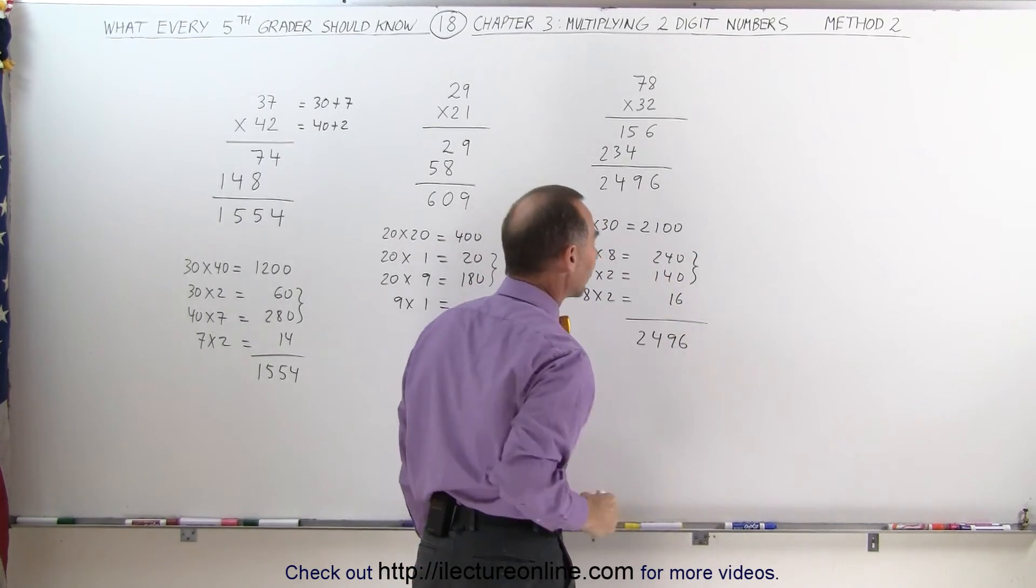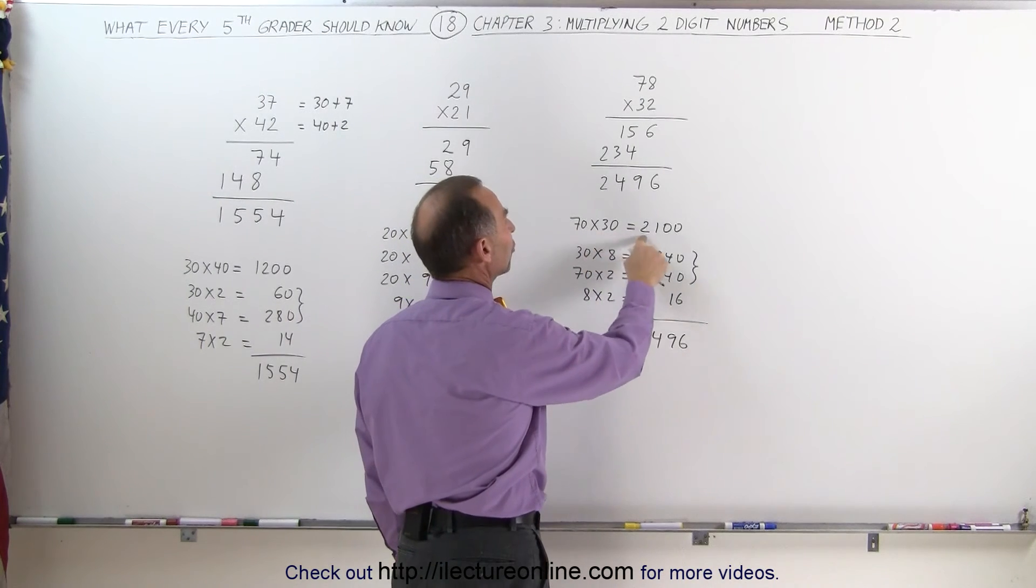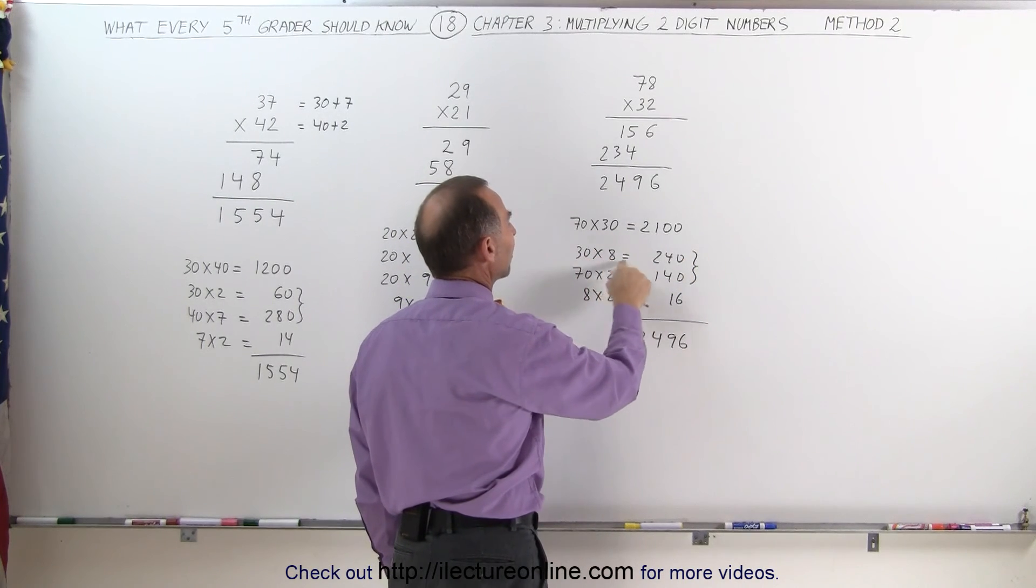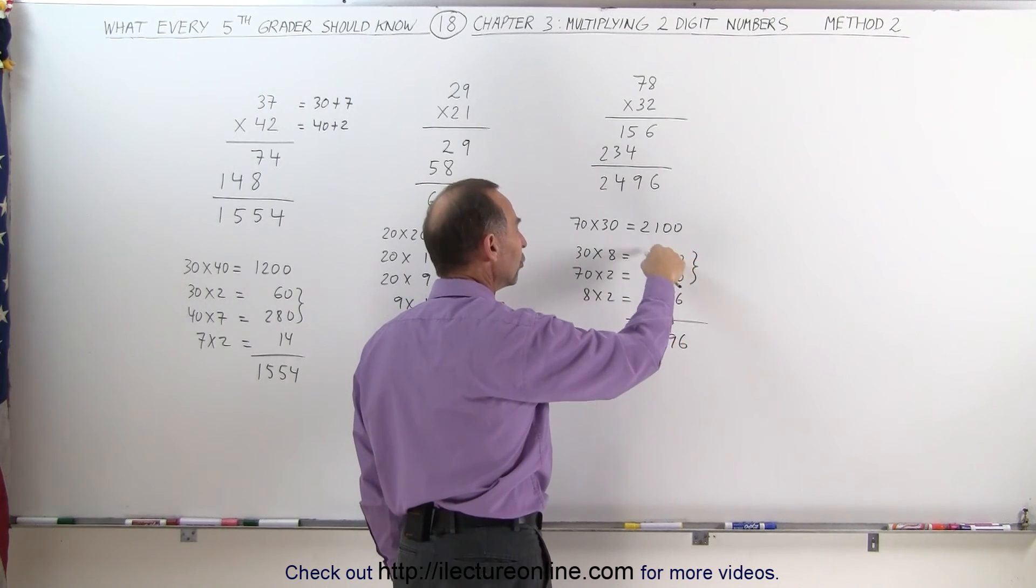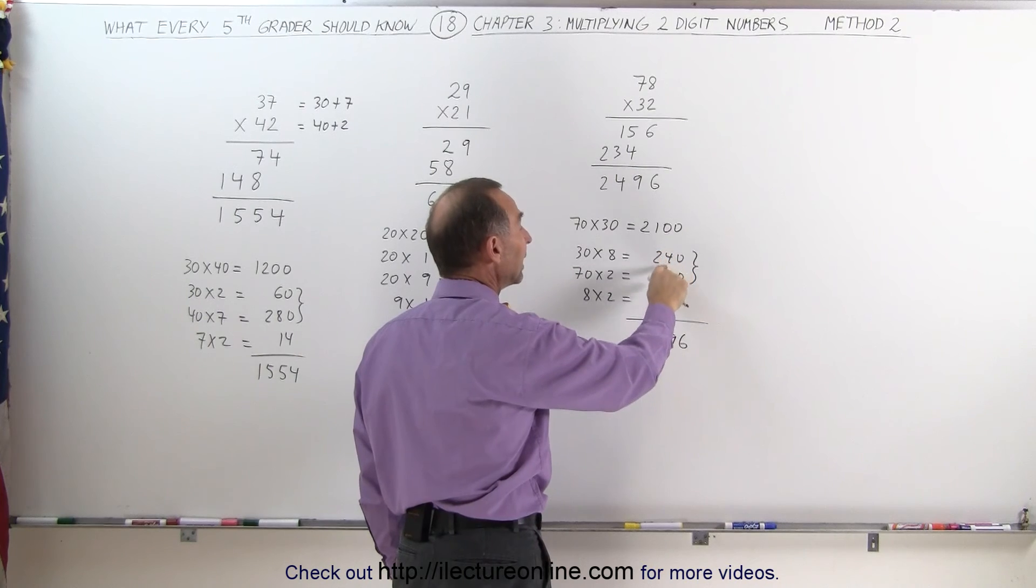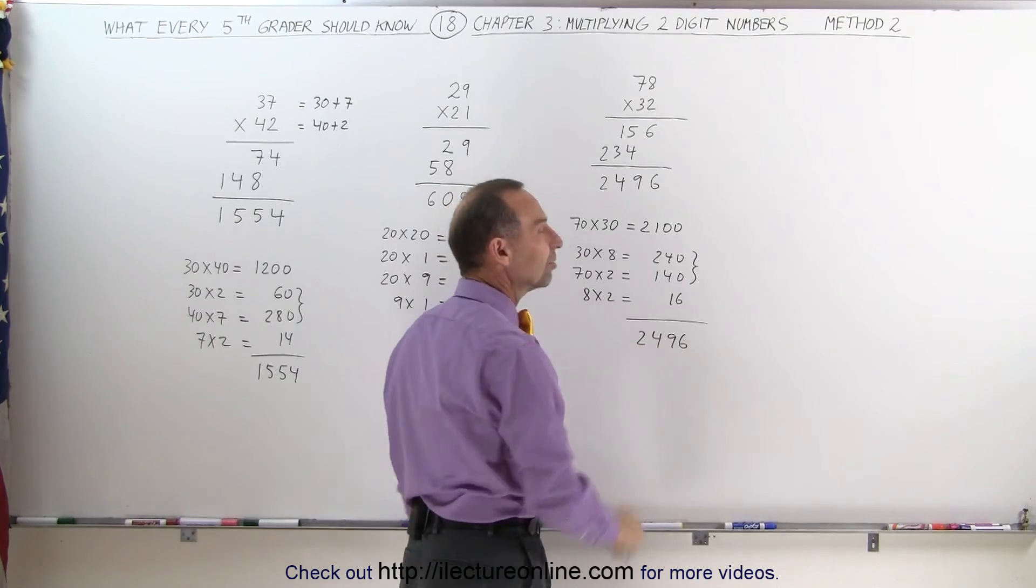Or you can simply just quickly add it like that. But again, if you're going to do it in your head, 70 times 30 is 2100. 30 times 8 is 240. 70 times 2 is 140. 8 times 2 is 16. Add these two together, 240 plus 140 is 380. Plus 100 is 480. 2480 plus 16 is 2496.